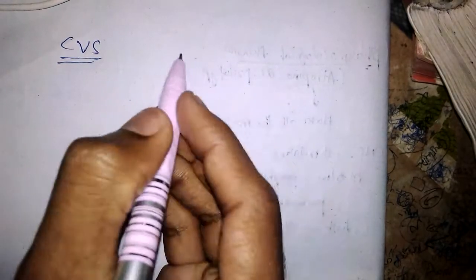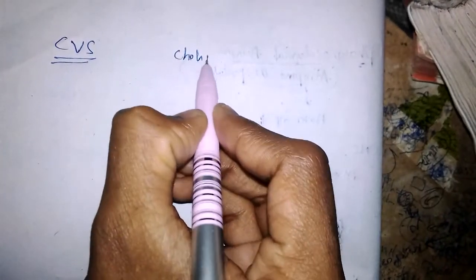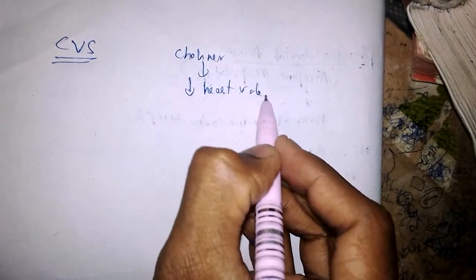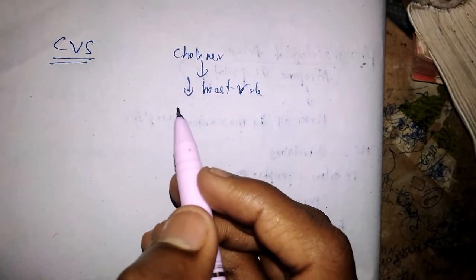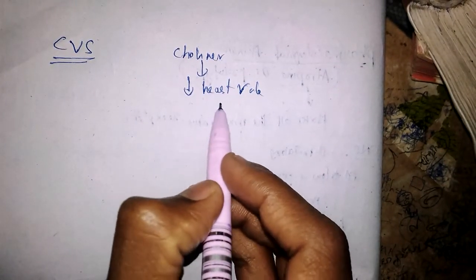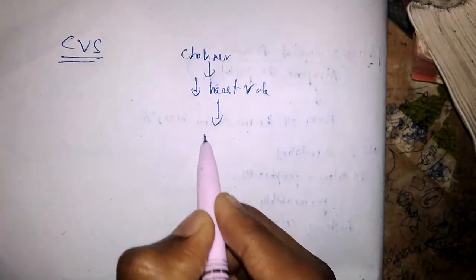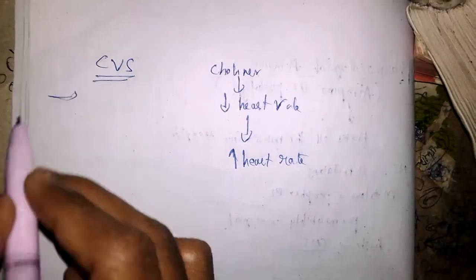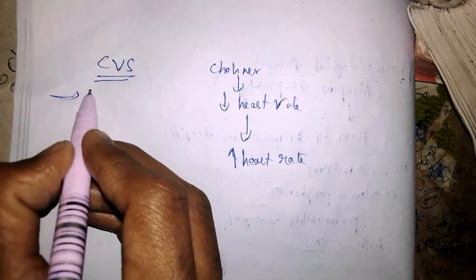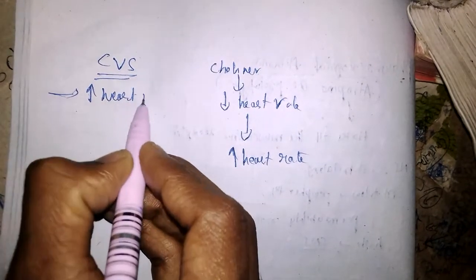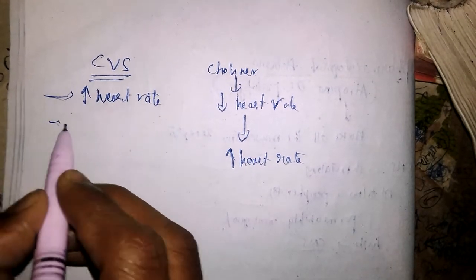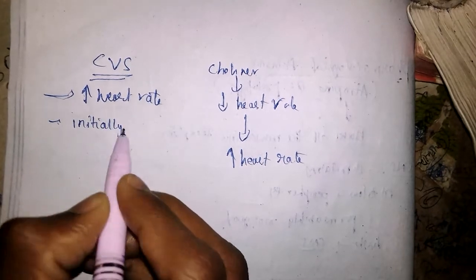Coming to action on the cardiovascular system: the cholinergic system decreases heart rate, so anticholinergic drugs increase heart rate. The action of atropine on the heart is an increase in heart rate. But initially, if you give the drug, there will be bradycardia initially.